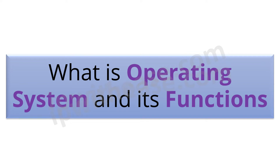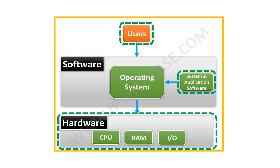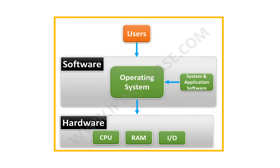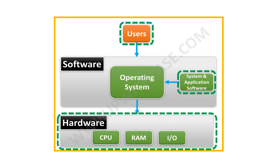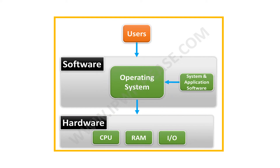Hello, in this short video we will understand the basics of operating system and its key functions. An operating system is an interface between the user and the hardware, and is responsible for the interaction of a computer's hardware and software. It also controls the execution of all the application programs.